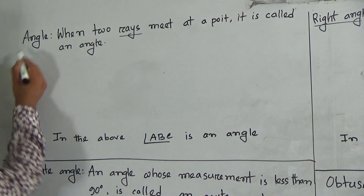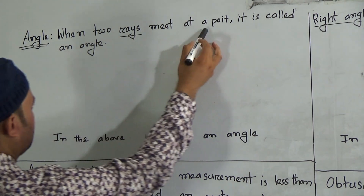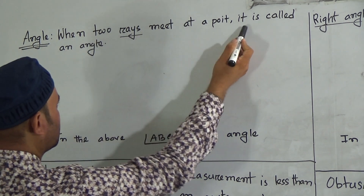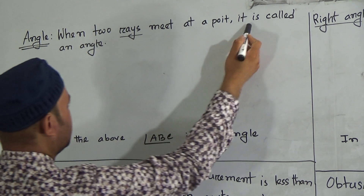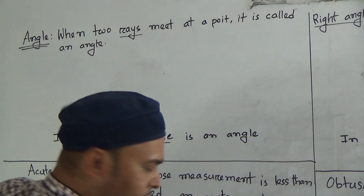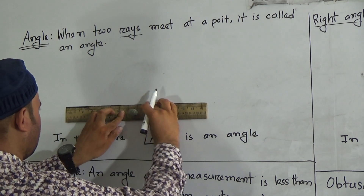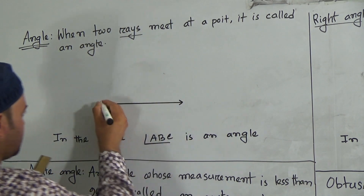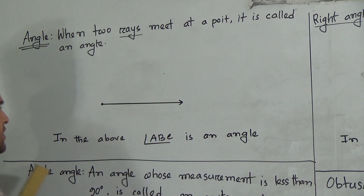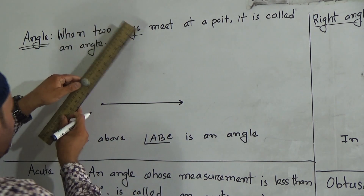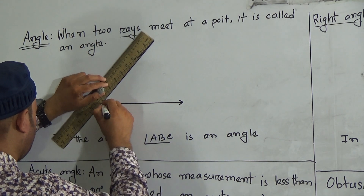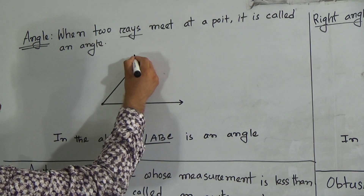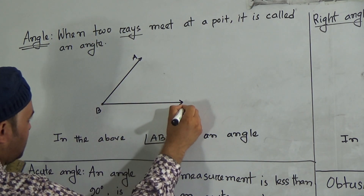First definition: angle. When two rays meet at a point, it is called an angle. First of all you have to draw a ray. Here this is a ray, and we know that a ray has a definite point but no definite length. Then you have to draw another ray on this point.